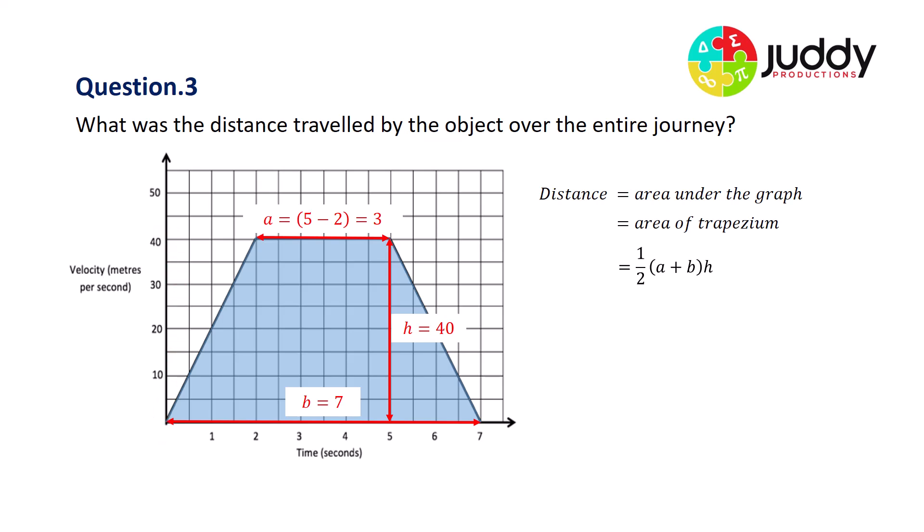Let's substitute those values into our equation. So the a was three, the b was seven, and the h was 40. Ten times 40 would be 400 and a half of that would be 200 meters. So this graph indicates the object traveled a total of 200 meters.